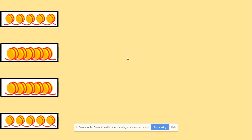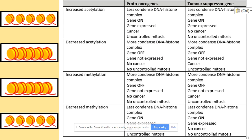We will now look at how acetylation and methylation affect those genes. Acetylation is the addition of an acetyl group to histones, and methylation is the addition of a methyl group to DNA. Looking at this table, increased acetylation and decreased methylation have the same effect — they make the DNA and histones complex less condensed, so the gene is expressed. Decreased acetylation and increased methylation also have the same effect — the gene is not expressed because the DNA is wrapped up around the histones and the complex is more condensed.